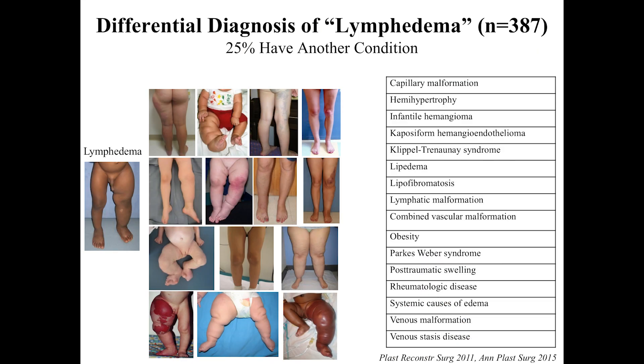Lymphedema is often misdiagnosed. We've done two studies where we looked at patients referred to our lymphedema program with a referring diagnosis of lymphedema, and about 25% of patients don't have lymphedema. Here's an example: the young child with lymphedema on the left, while all the other images are patients with an overgrown extremity — referred with lymphedema but having a different condition with a different prognosis and treatment. This table lists some other differential diagnoses.